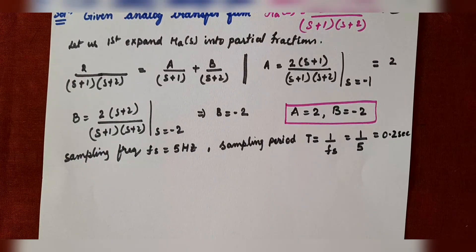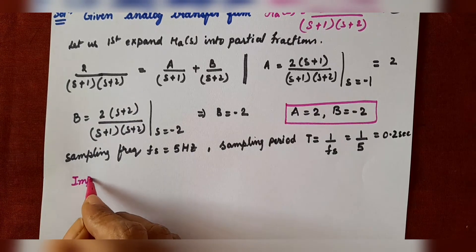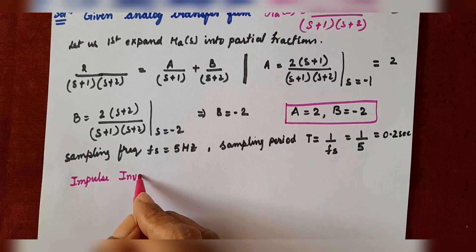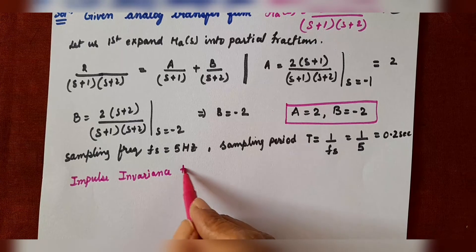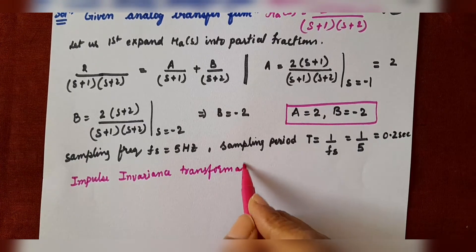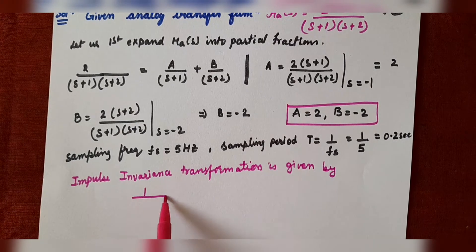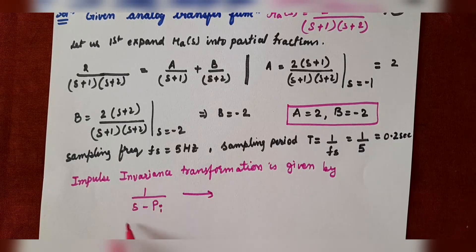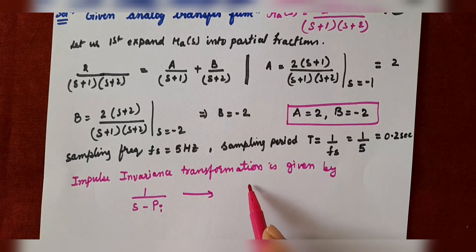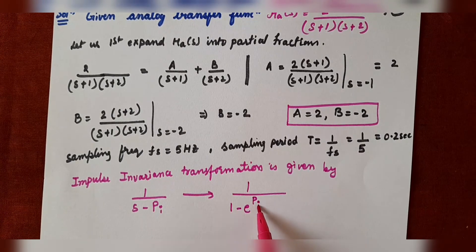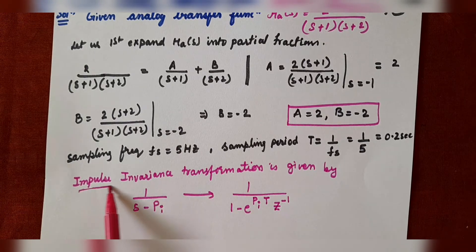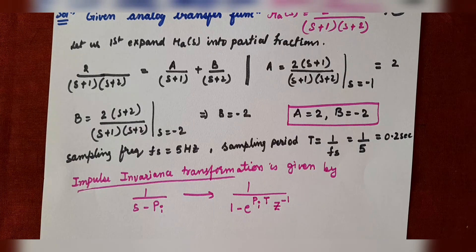The impulse invariance transformation is given by: 1/(s - p_i) is transformed to 1/(1 - e^(p_i · T) · z^(-1)). This equation is known as the impulse invariance transformation. You have to remember this equation for finding H(z). Let us apply this transformation to both terms.